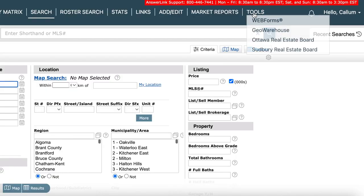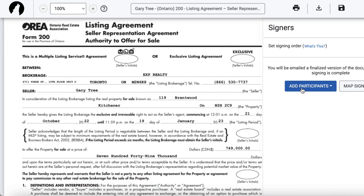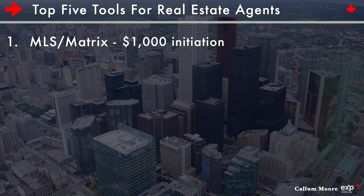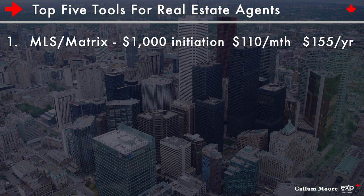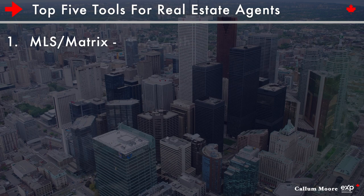It comes with applications and resources as well, like GeoWarehouse and tons of tools, none more important than Web Forms and Authentic Sign. It's basically an all-in-one package and it comes with your local real estate board you choose to join. To access this information you are now a realtor, but it does come with fees. Based on my area of Waterloo Region — it'll be pretty similar across Ontario — it's a $1,000 initiation fee to start, a monthly fee of $110, and an annual fee of $155. Not counting the one-time initiation fee, dividing the $155 by 12, I pay $123 monthly to have the best tool we need as agents. It's a must and I'll accept it.